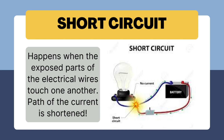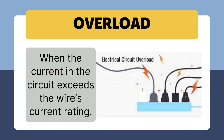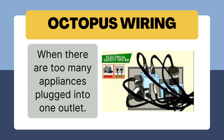Now let's talk about short circuits. This happens when the exposed parts of electrical wires touch one another, the path of the current is shortened, and this may cause fire. Another hazard is overload — when the current in the circuit exceeds the wire's current rating. So let's avoid plugging in many devices all at once. Octopus wiring may happen when too many appliances are plugged into one outlet, and this may also cause fire.